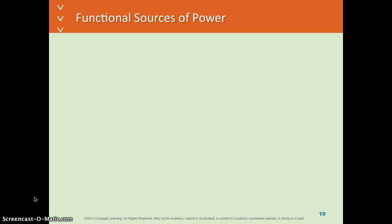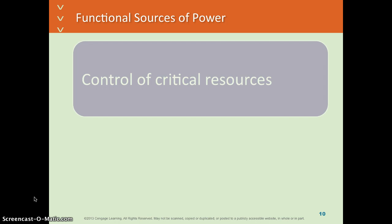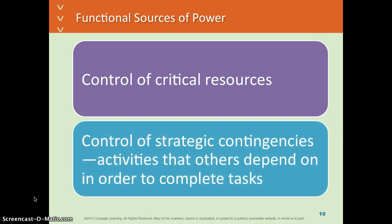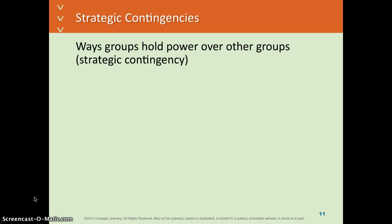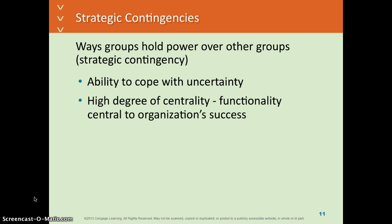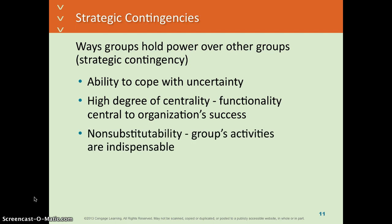Organizational types of sources of power include control of critical resources and control of strategic contingencies — activities that others depend on in order to complete their tasks. Ways to strategically hold that power include your group's ability to cope with uncertainty and ambiguity. You're central; everything revolves around you. Think of IT as an example — nobody else can do it, you're indispensable. Basically, power is held because everyone is dependent upon you and your group.